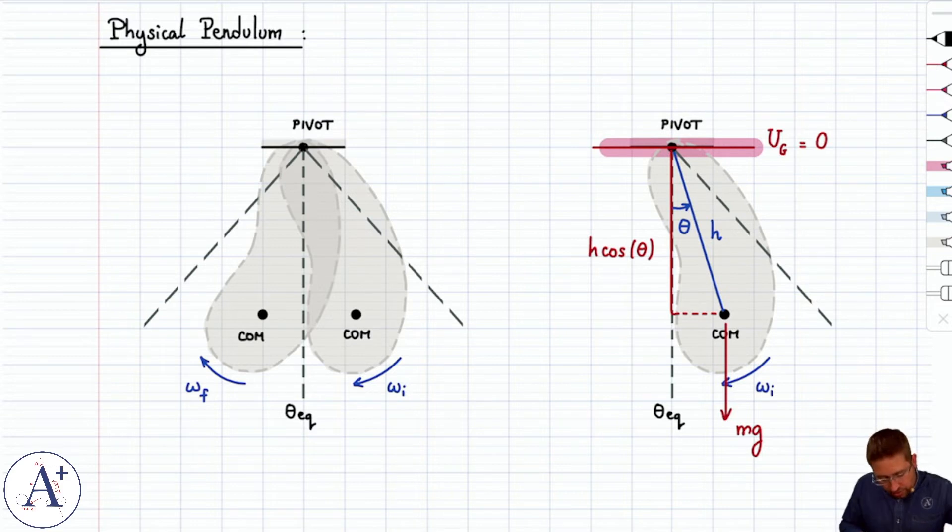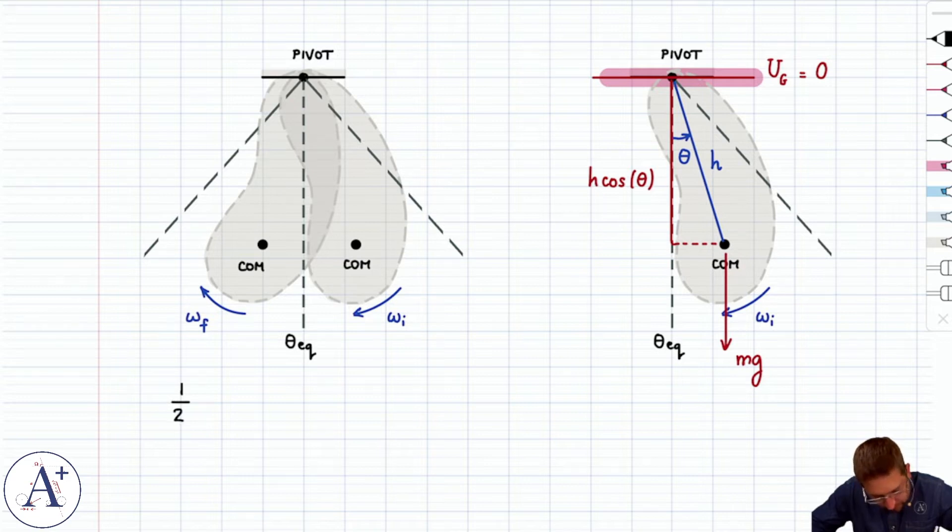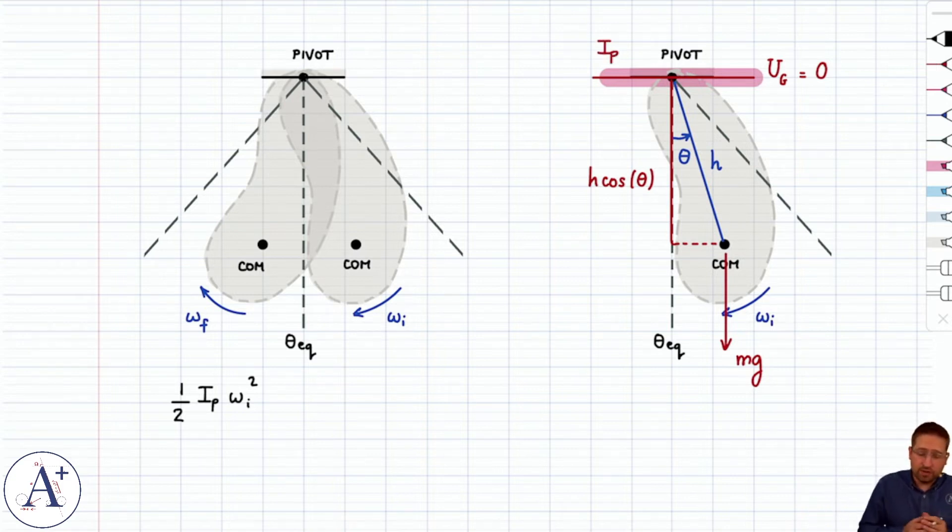So, if you wanted to apply conservation of mechanical energy between, let's say, this point and this point in the motion, and you want it to be as general as possible, you would write kinetic energy, which, careful, is rotational kinetic energy, one-half Ip omega initial squared, where Ip is the moment of inertia with respect to the pivot. And I would know exactly what that is if I knew the shape of this object, or maybe I was just given what the moment of inertia is. But to be general, we'll just call it Ip.